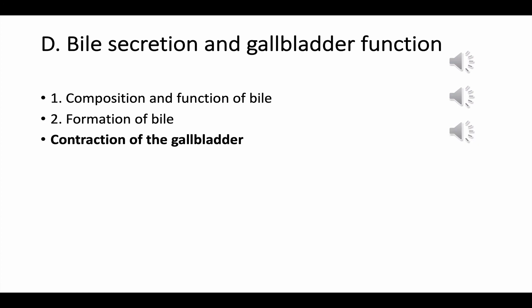Contraction of the gallbladder is caused by certain substances: the first is CCK, which is released in response to the presence of small peptides and fatty acids in the duodenum. It signals that bile acid is needed to emulsify and absorb lipids in the duodenum, causing contraction of the gallbladder and relaxation of the sphincter of Oddi. The second factor is acetylcholine, which also causes contraction of the gallbladder and secretion of its contents into the duodenum.